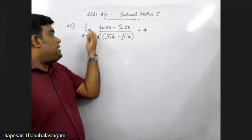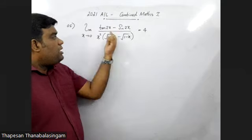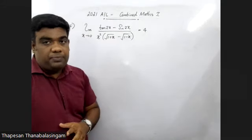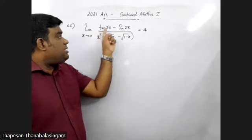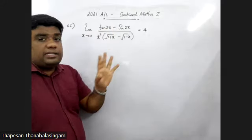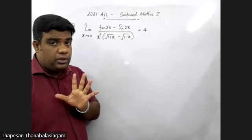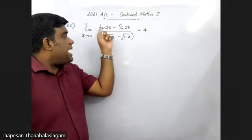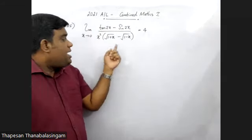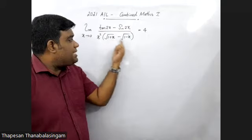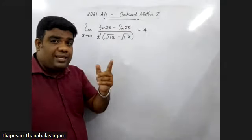Limit x tends to 0, so this value is 4m. If you have sine, sine on the right side. If you want to open root and minus, you remove your root, so this value is perfect.